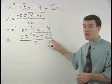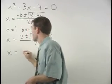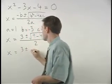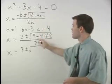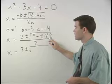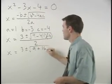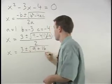Simplifying inside the radical, we have x equals 3 plus or minus the square root of 9 minus 4 times 1 times negative 4, which is 9 plus 16 over 2.